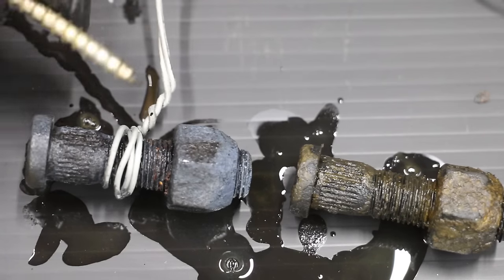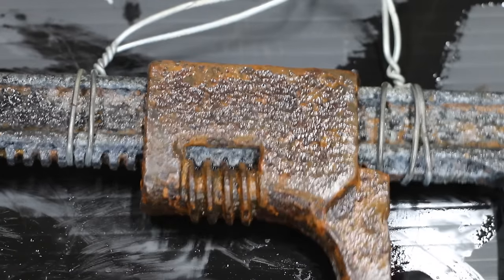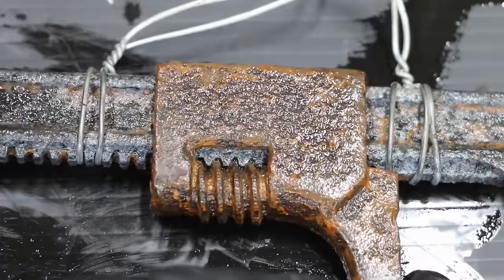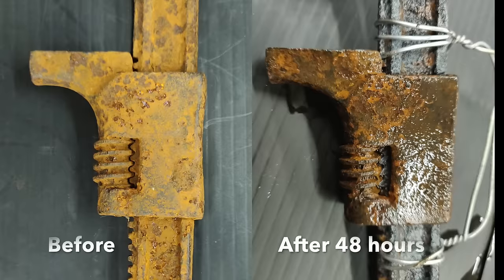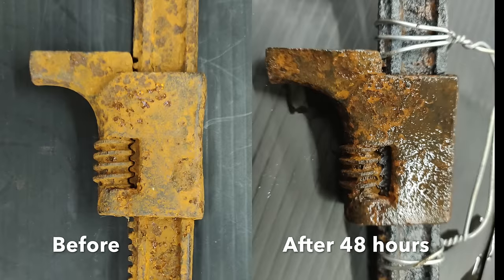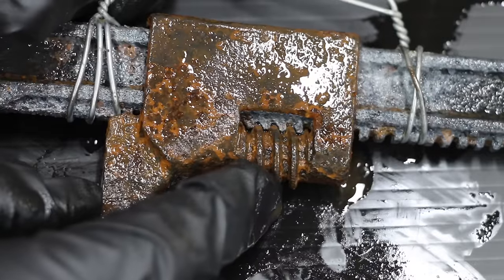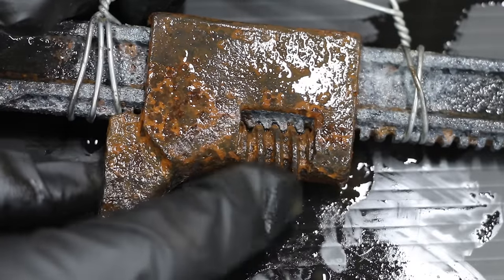The nuts are still seized on both bolts. The electrolysis process is working really well on the wrench. As you can see, there's a lot less rust on this wrench than when we first started. The wrench is still seized, but I think within the next 24 to 48 hours, we'll be able to get this to move freely.